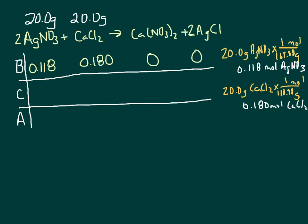I know that this is the one that's going to run out. So 0.118. And to find out how much of this it uses, I would go 0.118 times 1 over 2. Because what I want to get to is the calcium chloride. So it's really taking half of that.